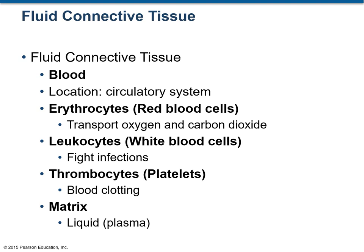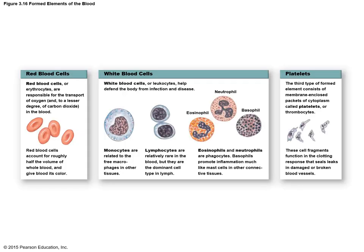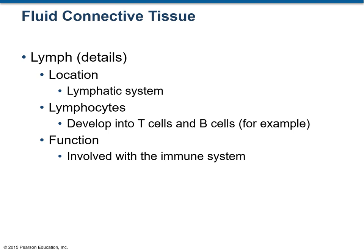The liquid part of the blood is known as plasma. This figure shows the formed elements of blood — that is, the solid part — while the liquid part is the plasma. The second type of fluid connective tissue is lymph, located in the lymphatic system. It is mainly made up of lymphocytes, a type of white blood cell, which develop into T and B cells. Their main function is immunity — the T and B lymphocytes are the most specialized soldiers in your body.